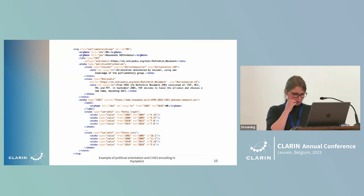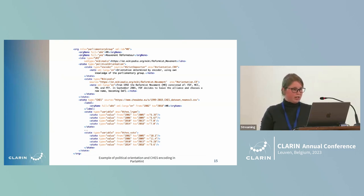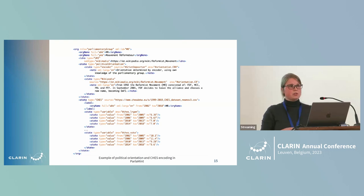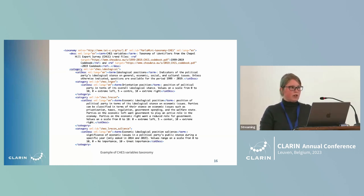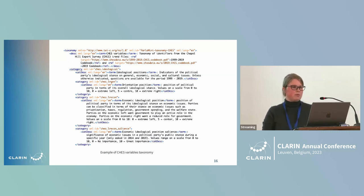As an example of encoding, we used the state element to provide values for the encoder, Wikipedia, and CHES sources. The CHES values are numerical, and we have not mapped them in order to preserve the scope and structure of the original data. There is also a taxonomy example from the CHES variables where descriptions of different terms are provided — for example, ideological positions — including not only explanations but also the scale in which the value should be interpreted.